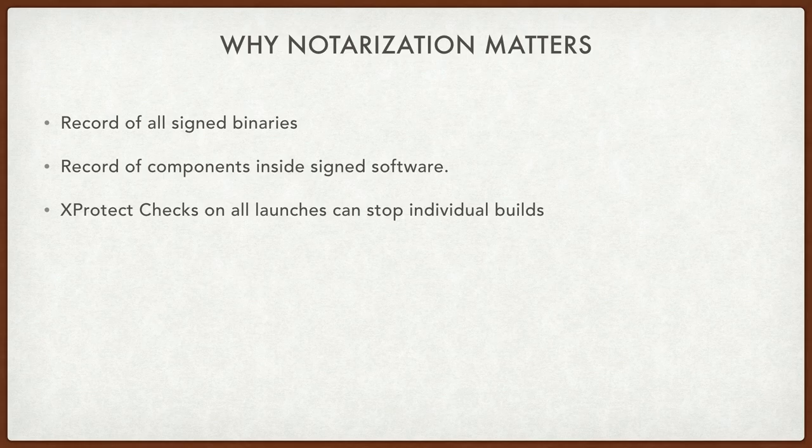So it used to be that if you really wanted to lay down the hammer of God, you had to essentially revoke the entire developer ID certificate — and now everything from that developer is gone. I'm thinking here of a couple of scandals recently that involved large social media networks where they lost their ability to distribute internal applications entirely because Apple revoked their root. Wouldn't it be nice if they didn't have to get rid of the lunch menu, but instead could get rid of the quote-unquote VPN that was being used to spy on 13 to 18 year olds? This is a direct result of those kinds of things. Also, as we get to Catalina, XProtect checks on all launches will help stop individual builds as well. So if there's an individual build that is problematic for any reason, its notarization can then be revoked.